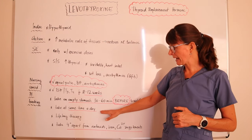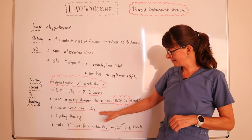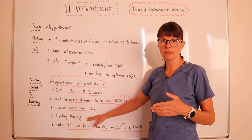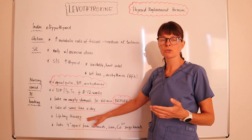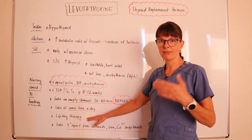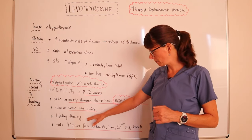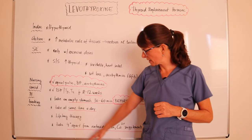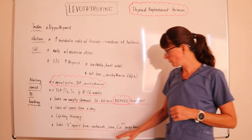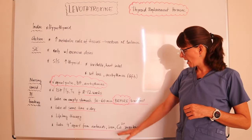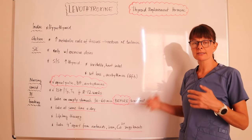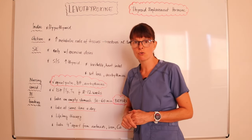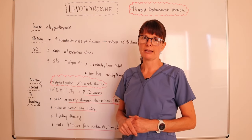Take levothyroxine at the same time each day — this is very important. It will be a lifelong therapy because the thyroid gland is not producing enough thyroid hormone. Additionally, advise the patient to take it four hours apart from any antacids, iron, and calcium supplements, as these will interact and decrease the absorption rate of levothyroxine.